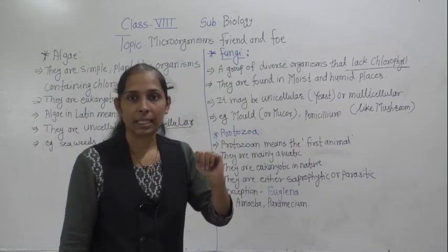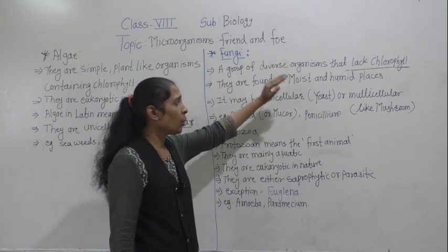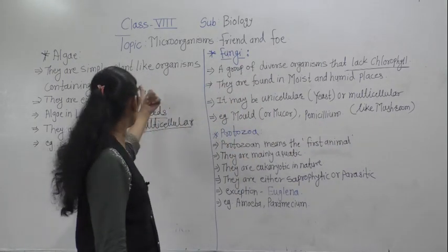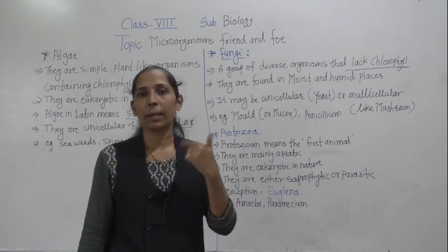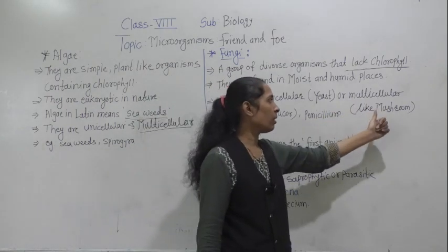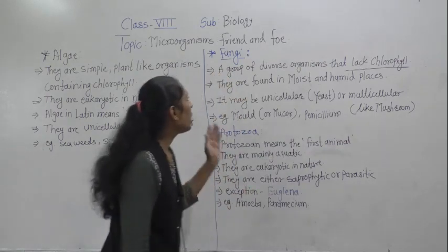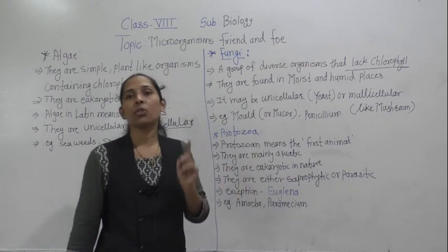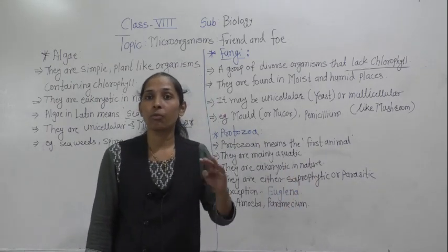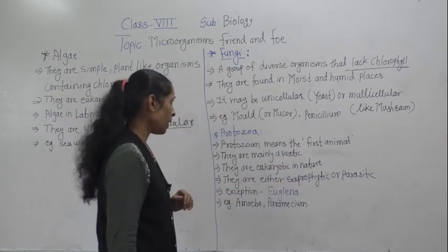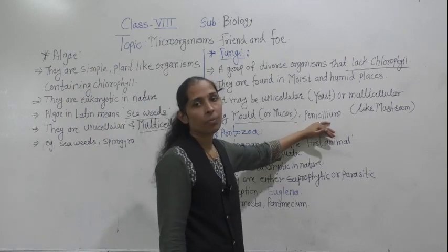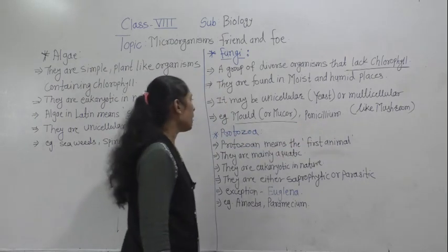Like algae, fungi may also be unicellular or multicellular. The example of unicellular fungi is yeast, and the example of multicellular fungi is mushroom. Fungi are also eukaryotic in nature, meaning they have a well-developed and well-organized nucleus with a nuclear membrane. Examples of fungi include mold, Mucor, and Penicillium.